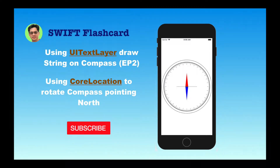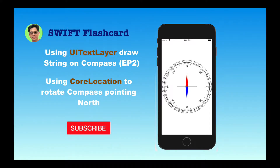Hey guys, this is the second part of the drawing compass episode. Last time we drew a compass — we put all these marks along the circle and also created two needles in the center of the compass. This time we are going to put all these labels along the compass, use the UI text layer to create all the degree labels along the marks, put the directions like north, east, south, west on top, and finally rotate the compass to point north using Core Location.